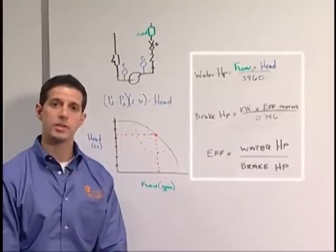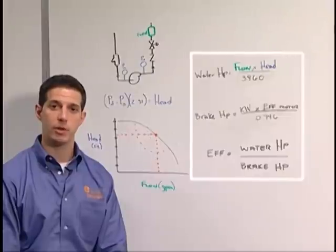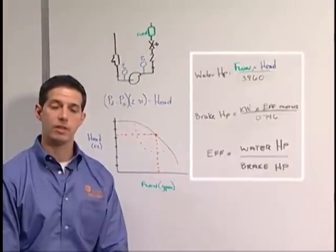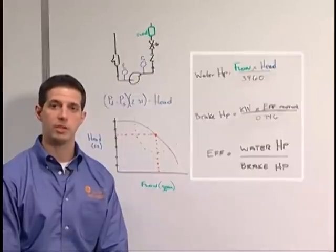Brake horsepower is calculated by taking the actual tested readings in KW, multiplying that by the nameplate motor efficiency, and dividing that by .746. The difference between the water horsepower and brake horsepower is the efficiency.